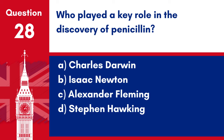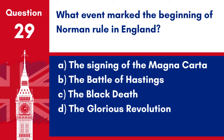Question 28. Who played a key role in the discovery of penicillin? a. Charles Darwin. b. Isaac Newton. c. Alexander Fleming. d. Stephen Hawking. Answer: c. Alexander Fleming. Alexander Fleming played a key role in the discovery of penicillin in 1928.